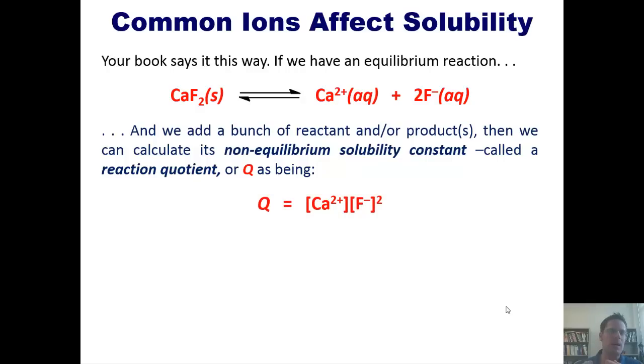So once again, the idea behind Q is that if we have amounts of reactants and products in this equilibrium setting, we throw them into this, we can determine whether or not we will have precipitation.